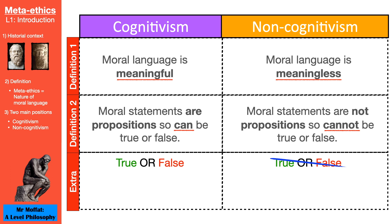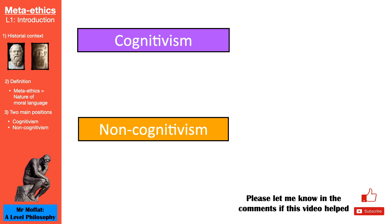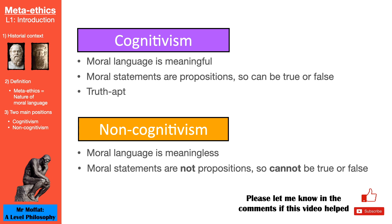Another way of saying this is that cognitivists think moral statements are truth-apt. Non-cognitivists think moral statements are not truth-apt — they cannot be true or false, or what we said in our simple definition: meaningless. Non-cognitivism will make more sense when we look at specific examples like emotivism, which claims moral language is just an expression of emotion. So let's review: cognitivism means moral language is meaningful; moral statements are propositions, so they can be true or false — they're truth-apt. Non-cognitivism is the position that moral language is meaningless; moral statements are not propositions, cannot be true or false — they're not truth-apt. Pause and complete the activity before going on to the next video.